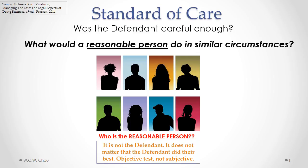To be clear, the reasonable person is not the defendant. We are not asking whether or not the defendant did their best in that particular situation when the accident happened. The legal test applied here for standard of care is an objective test, not a subjective test. We're not asking subjectively whether the actual person did their best to avoid the accident — we are asking whether a reasonable person would have caused the same accident.